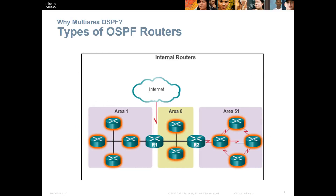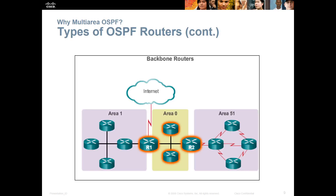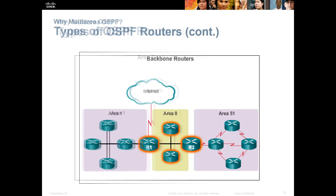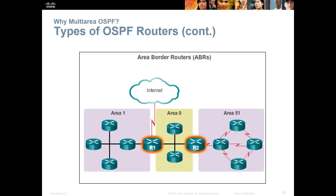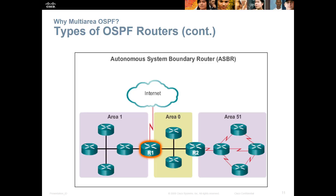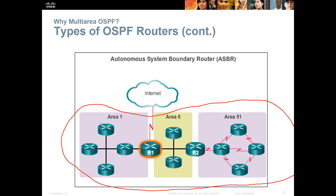Types of OSPF routers: we have internal routers, and we have backbone routers. We also have what's called an Area Border Router, or ABR. You sometimes see them referred to as gateways. These are in the middle — they're in both areas, so they're area borders. We could also have an Autonomous System Boundary Router, or ASBR. This may be your company's edge. When we leave to go to the internet, that's a different autonomous system.